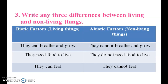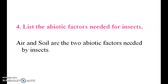Write any three differences between living and non-living things. Living things can breathe and grow, whereas non-living things cannot breathe and grow. Living things need food to live, whereas non-living things do not need food to live. Living things can feel, whereas non-living things cannot feel. List the abiotic factors needed for insects: air and soil are the two abiotic factors needed by insects.